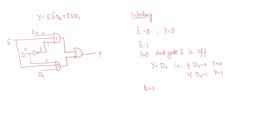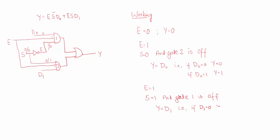Similarly, when enable is 1 and select line is also 1, s-bar becomes 0 and s becomes 1. Since one input to the first AND gate is 0, the first AND gate is off, and whatever value is present at d1 becomes the output. So when s is 1, AND gate 1 is off and y equals d1: if d1 is 0 then the output is 0, and if d1 is 1 then the output is 1.